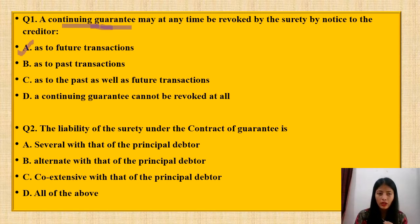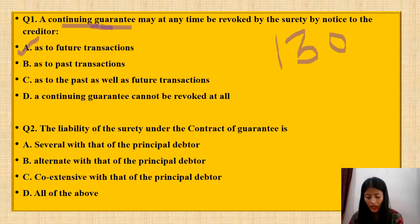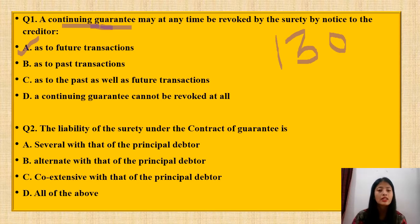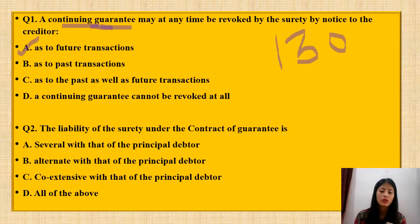Option A is the correct one. You have to refer to Section 130 of the Indian Contract Act for this question. Section 130 talks about revocation of a continuing guarantee — a continuing guarantee may at any time be revoked by the surety as to future transactions by giving notice to the creditor. So, by giving notice to the creditor, the surety can revoke the continuing guarantee as to future transactions.